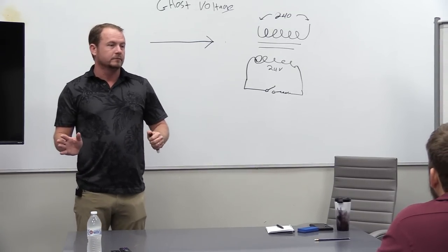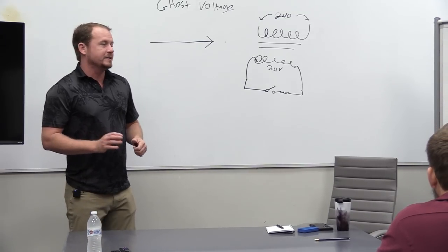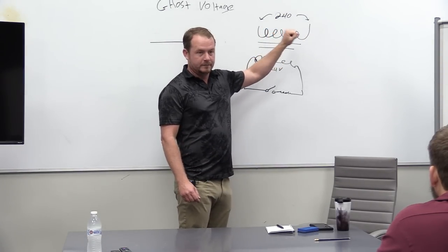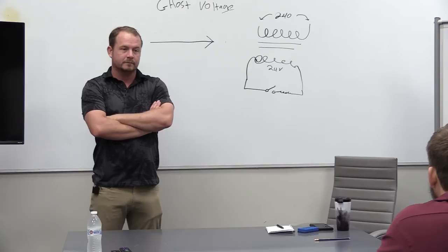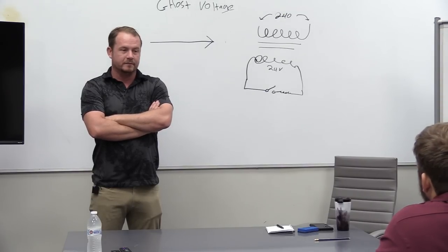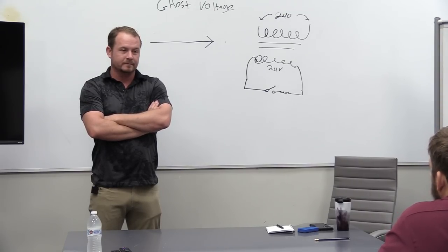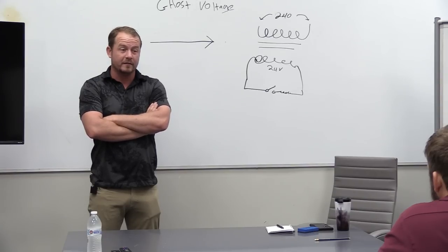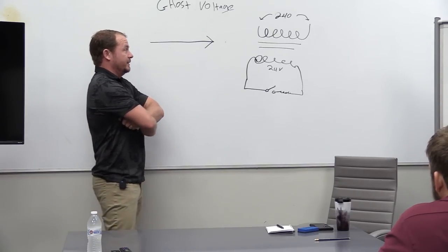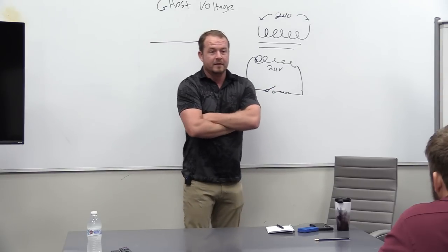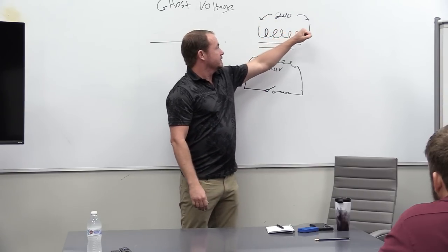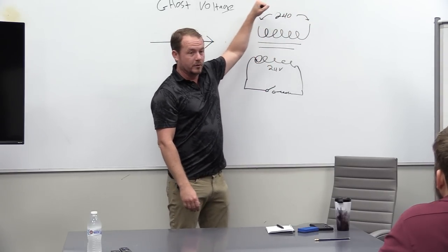Any current? No. Well, how is that possible? Because we have 240 volts applied across this coil here. How is that possible? How is it possible that it doesn't draw any current? The voltage isn't moving. Oh, it is moving. Oh wait, you better believe it's moving. It's alternating current. So it's moving back and forth 60 times per second, 60 Hertz, right?